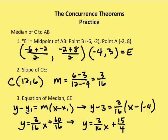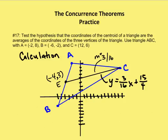Using the point-slope formula with point E: y - 3 = 3/16(x - (-4)). Solving for y gives us y = 3/16x + 60/16. We find a common factor of 4 in 60 and 16, so the final equation is y = 3/16x + 15/4.